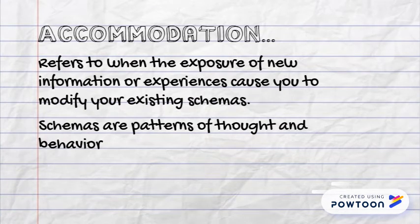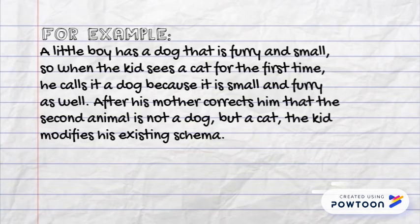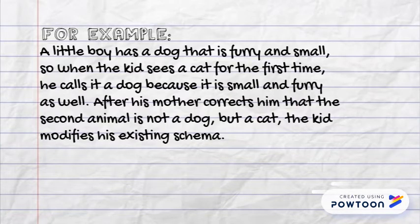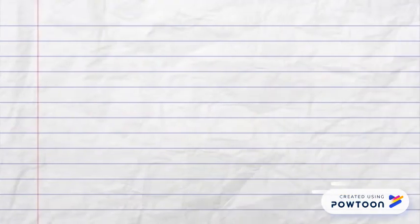To make it easier to grasp onto these concepts, we will now illustrate both with examples. Accommodation: a little boy has a dog that is furry and small, so when the kid sees a cat for the first time, he calls it a dog because it is small and furry as well. After his mother corrects him and tells him that the second animal is not a dog but a cat, the kid modifies his existing schema and realizes that not all furry small animals are dogs. The kid now refers to a cat as a cat and not as a dog.